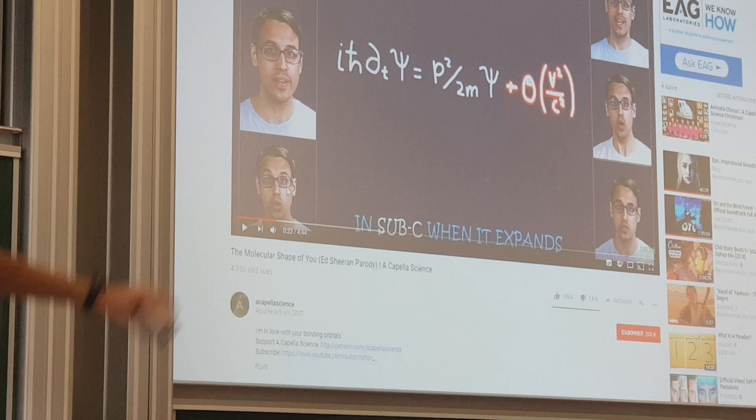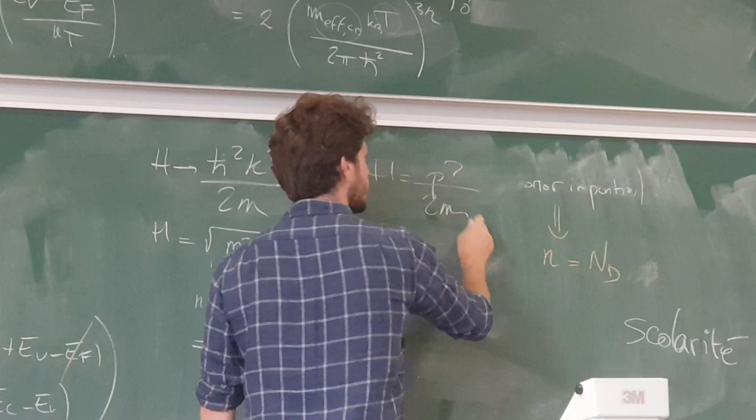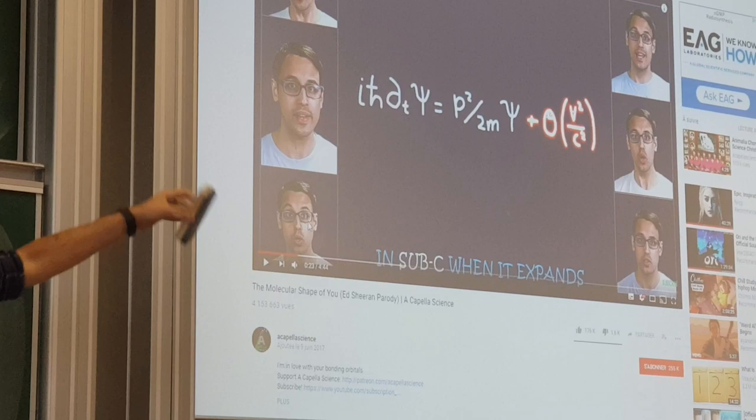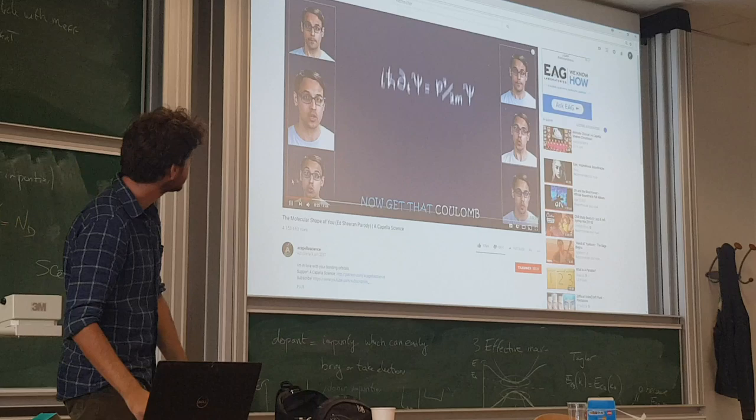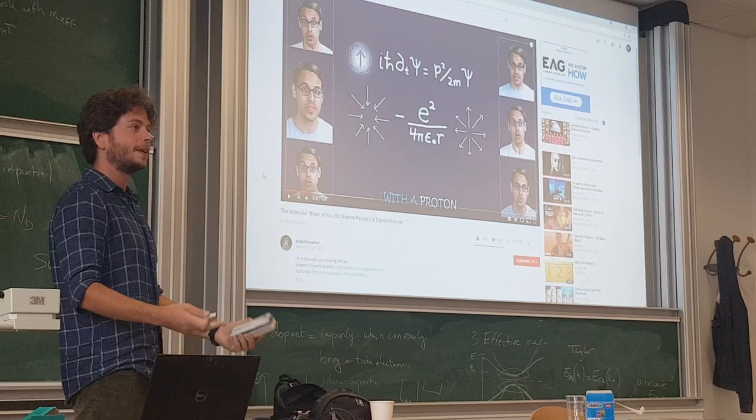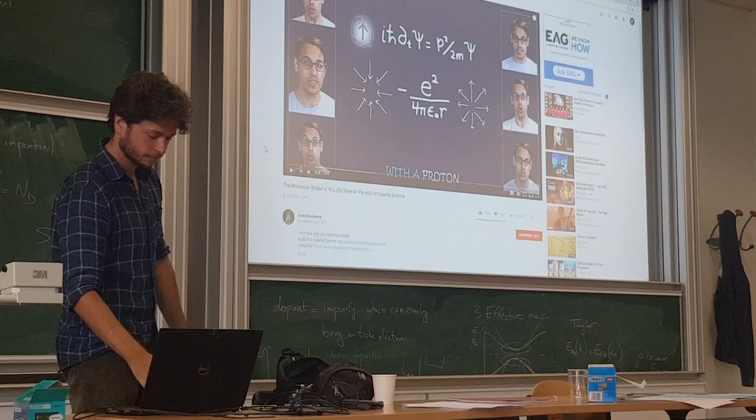The assumption here is that the Hamiltonian is just p squared divided by 2m, so he's neglecting any kind of potential because potential will come in the next step. Now if I add some additional potential, I get confinement, and if I get confinement I will have discrete energy levels.